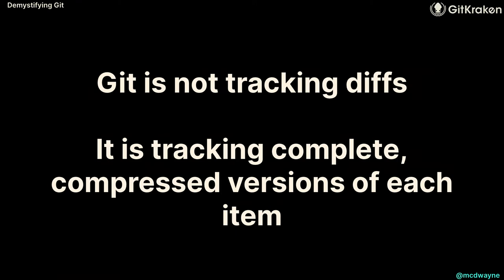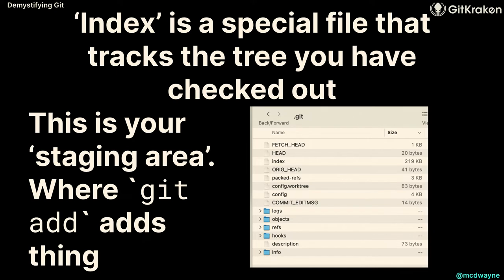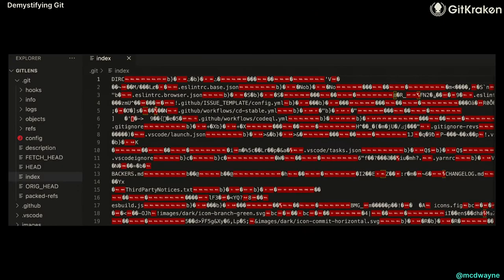Git is not tracking diffs — it uses diffs. 'diff' is actually a bash command: given two things, what's different? Git diff does that specifically for files in the index you're tracking. But Git is not storing the diff — it's showing you the diff. That's a human concept. Git stores the complete compressed version every time. The index is a special file that tracks the tree those blobs are attached to — that's your staging area. When you git add, it adds to the index.